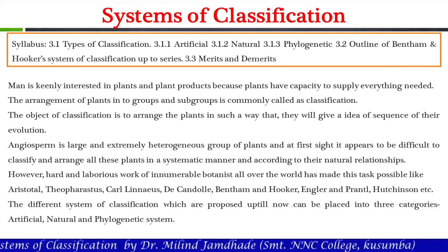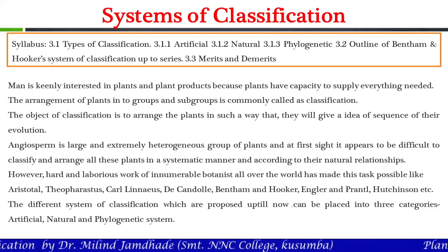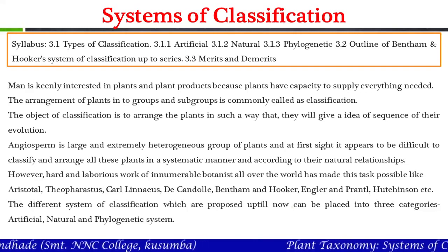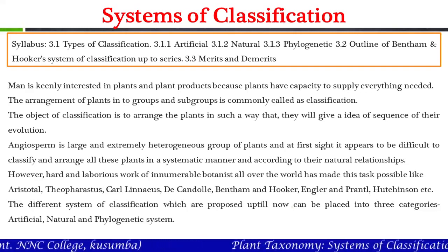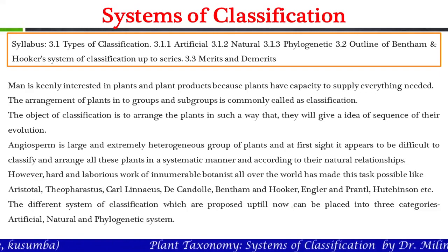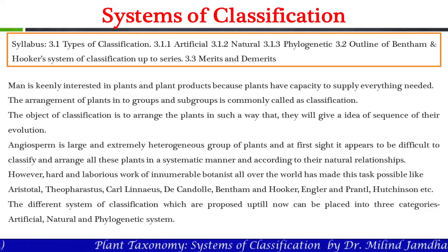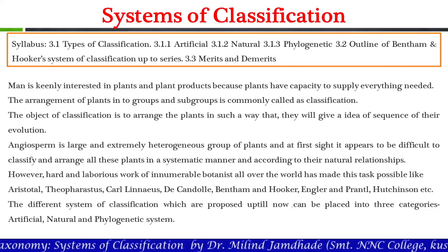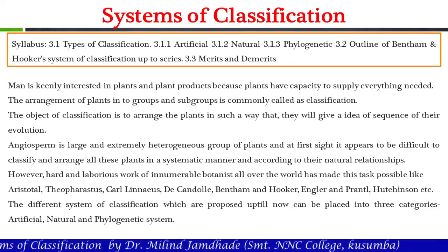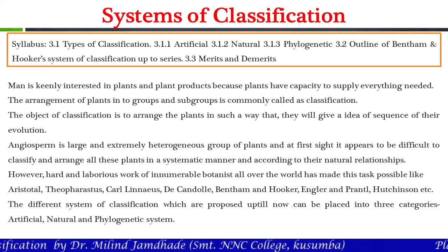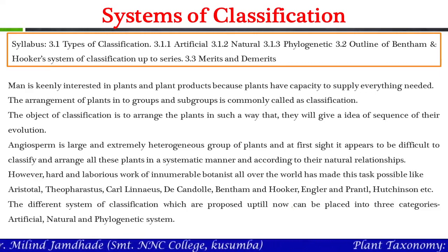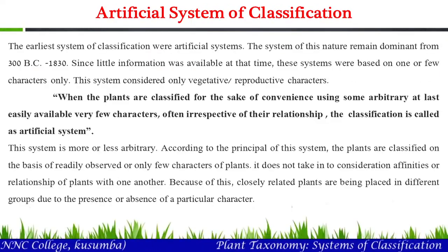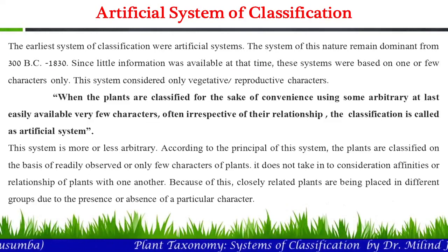The different systems of classification proposed until now can be placed into three categories: artificial system of classification, natural system of classification, and phylogenetic system of classification. Let us study these classification systems one by one.